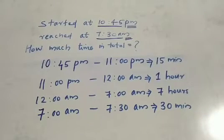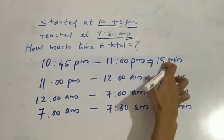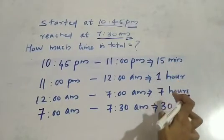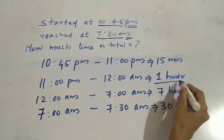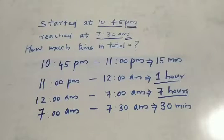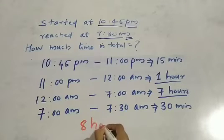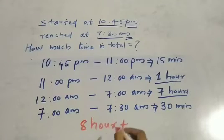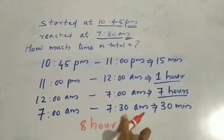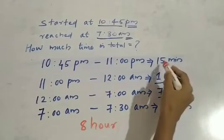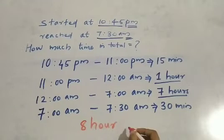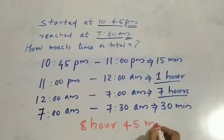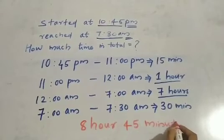So now we want to calculate the total: 15 minutes plus 1 hour plus 7 hours plus 30 minutes. So 1 hour plus 7 hours is 8 hours. And 15 minutes plus 30 minutes is 45 minutes. So the total is 8 hours and 45 minutes.